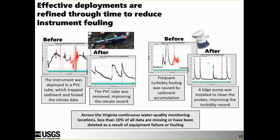Throughout our continuous water quality monitoring networks, we typically maintain greater than 90% of the data measured in the field, meaning we remove or lose less than 10% due to fouling or instrument failure. If you find you're having to delete months of data from an annual record, it's time to think about how that deployment could be modified and improved.